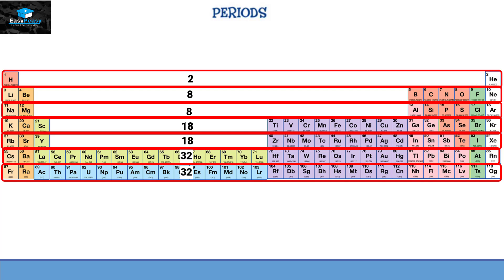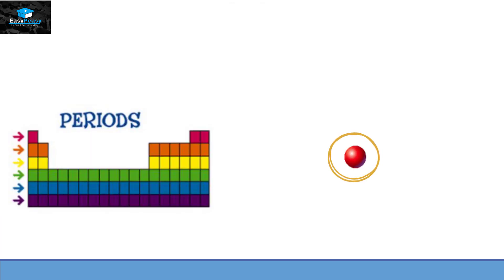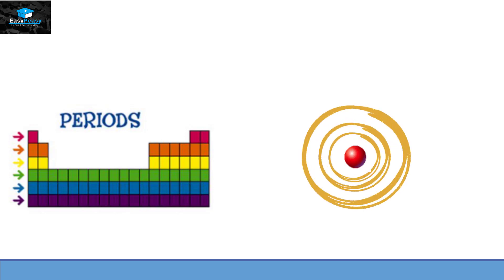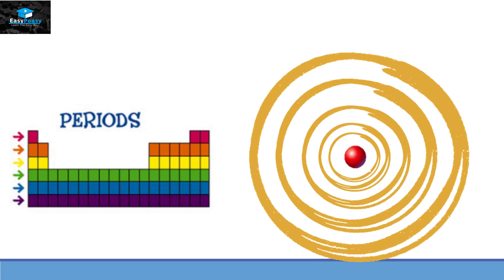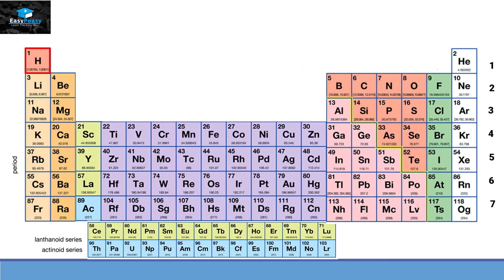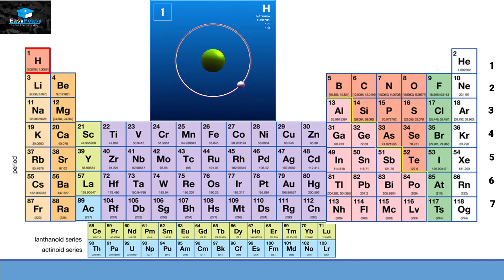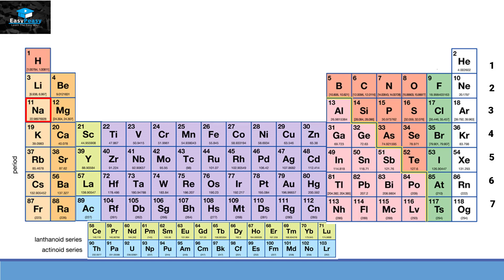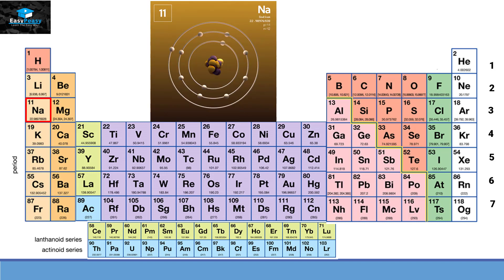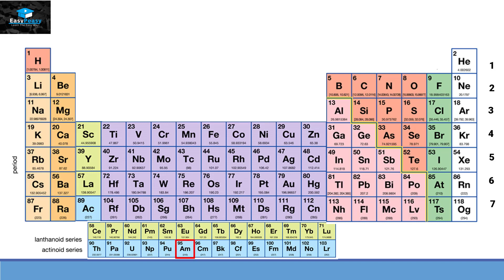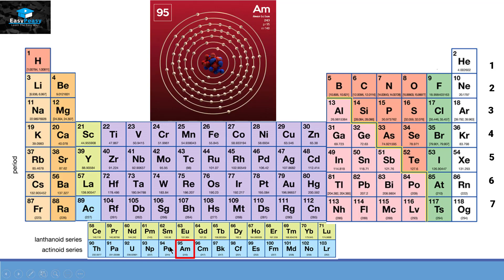These horizontal rows or periods tell us the number of shells present in that element — the period number equals the number of shells. So if an element is in period 1, it has one shell; period 2 means two shells, and so on. For example, hydrogen belongs to period 1 so it has one shell, carbon is in period 2 so it has two shells, sodium is in period 3 so it has three shells, and americium in the actinide series is in period 7 so it has seven shells.